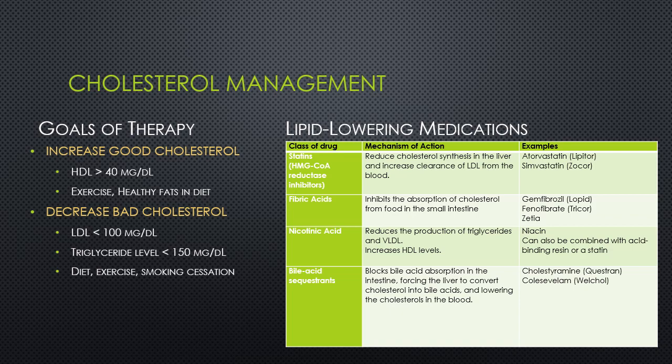Atherosclerosis occurs when there's a buildup of low-density lipid particles on the walls of the arteries, and this is thought to occur in response to injury to the endothelial linings of the vessel. These deposits, or plaques, create an inflammatory response within the vessels that leads to decreased or obstructed blood flow, and therefore tissue ischemia, infarct, and necrosis.